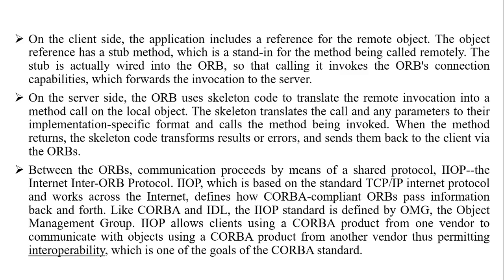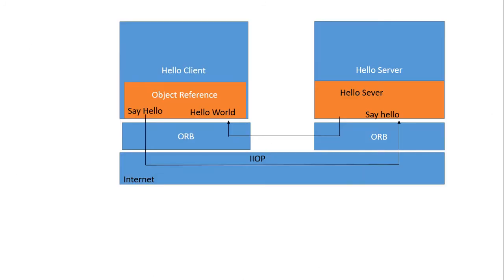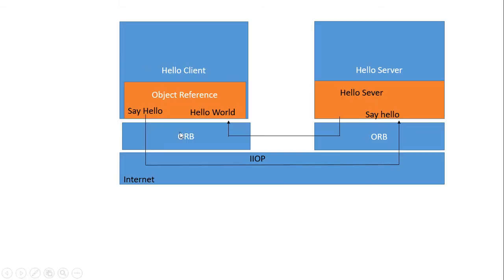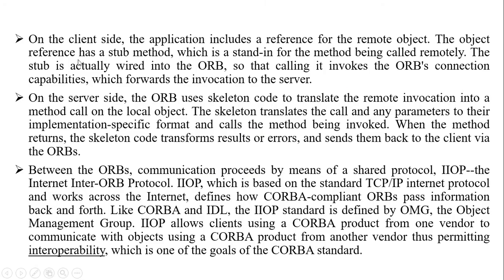On the client side, the application includes a reference for the remote object to access or send a message. The object reference has a stub method — the stub resides on the client side. The stub is a stand-in for the method being called remotely and is wired into the ORB.